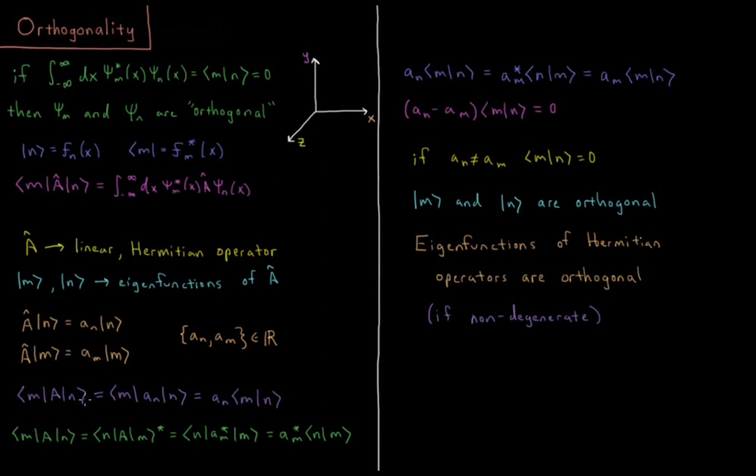So now ⟨m|A|n⟩, we know that A|n⟩, A acting on n, is going to give us a_n. So we have ⟨m|A|n⟩. a_n is a constant, which we can factor out of this integral. So now we have a_n times the integral of ψ*_m ψ_n, as we saw up there.